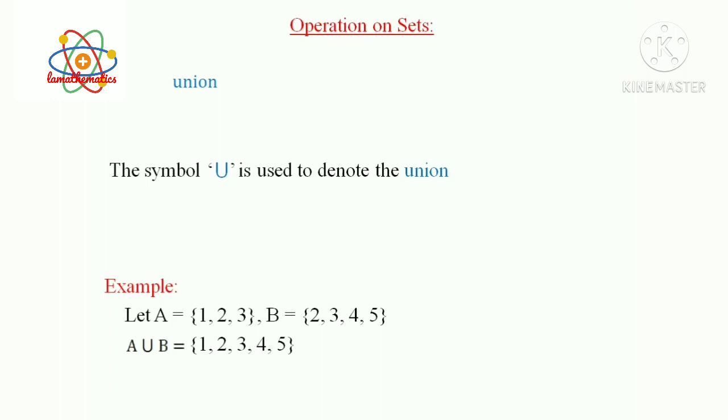The symbol ∪ is used to denote the Union. Therefore, we can write A ∪ B = {1, 2, 3, 4, 5}. In Set Builder form, we can write A ∪ B = {x : x ∈ A or x ∈ B}. That is, A ∪ B is a set which contains elements either in A or B.